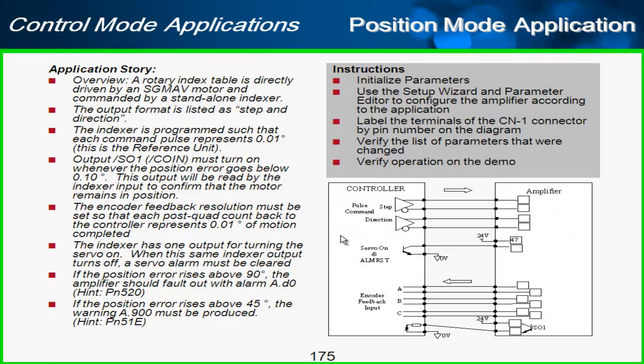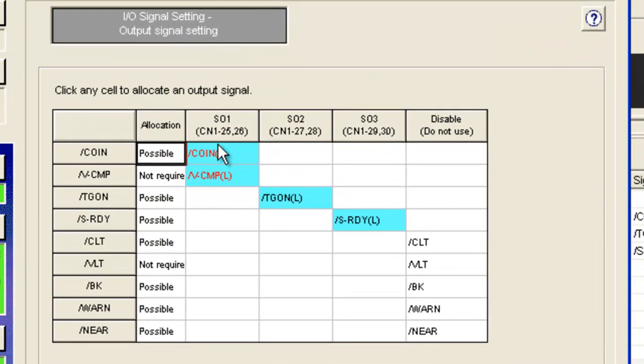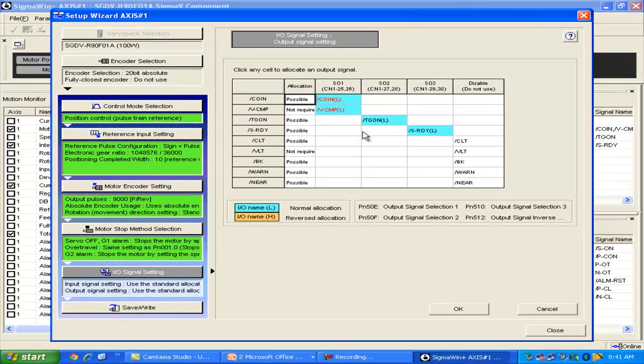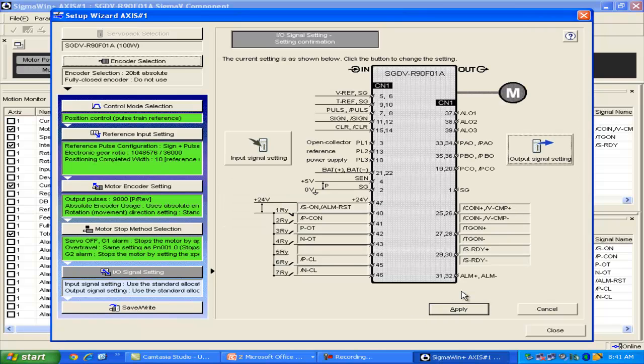Now for outputs, we're looking at this SO1 to be the coin output. If I look at my outputs, SO1 is coin. It's also velocity compare. And since velocity compare is not applicable in position mode, I can just leave this here. This is the default. And we'll apply that.